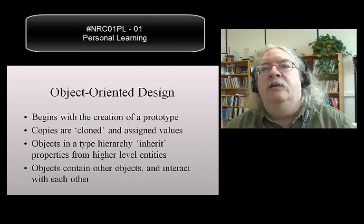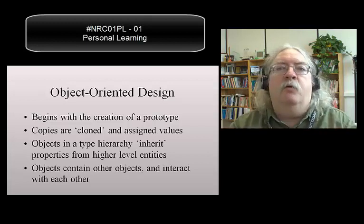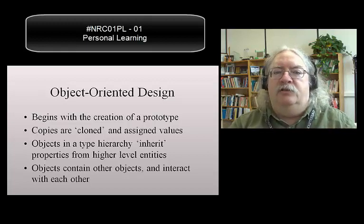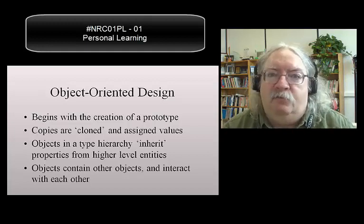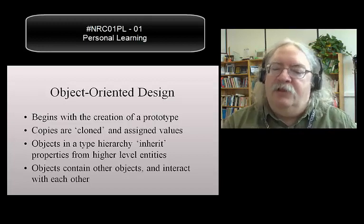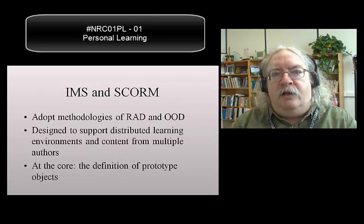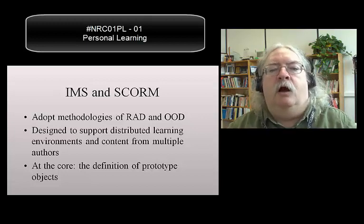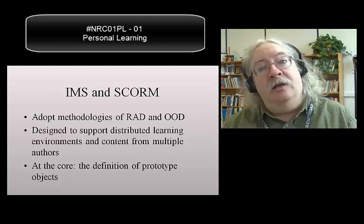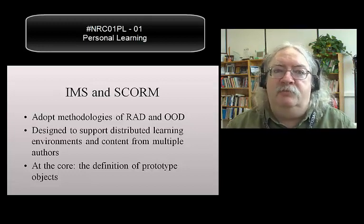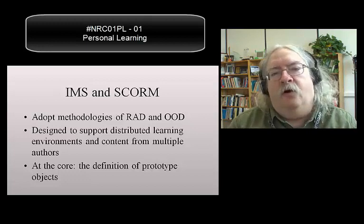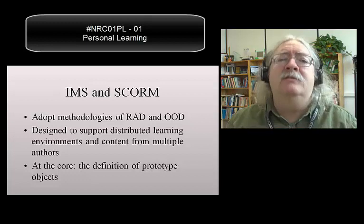With object-oriented design, you begin with a prototype, and this prototype would inherit values. You'd have a basic object — resource — and then more precisely defined objects such as book, essay, or video. They would inherit the properties of a resource, so you can save them, trade them, and describe them in the same way, but they would have their own unique properties as well. This led to the creation of the IMS Learning Object Metadata Specification and SCORM — Shareable Content Object Reference Model — which were specifications to define what would be called a learning object, where a learning object would be something course designers could just drag and drop into their course.